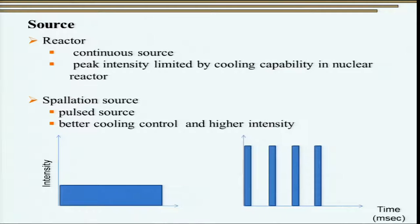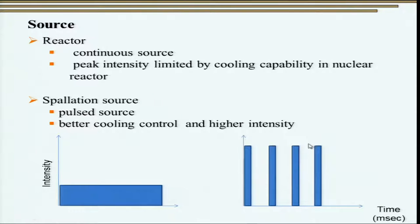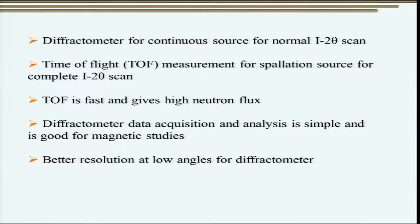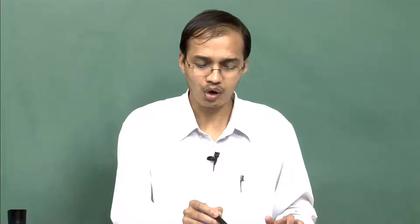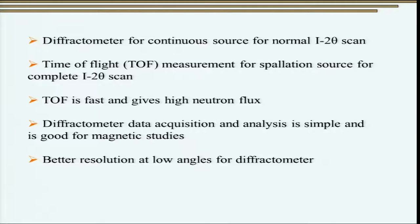A reactor acts as a continuous neutron source — as shown here with constant intensity. The peak intensity is limited by the cooling capability of the nuclear reactor. A spallation source, in contrast, is a pulsed source: instead of continuous energy, we get pulses as a function of time, and the pulse intensity is much higher due to better cooling control. For the continuous spectrum, similar to X-rays, we can put a monochromator and use a normal diffractometer to carry out the same kind of studies as for X-ray diffraction.